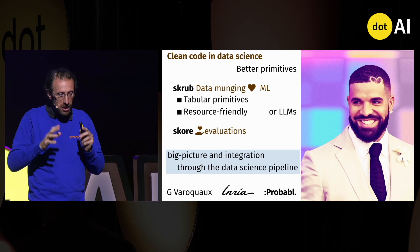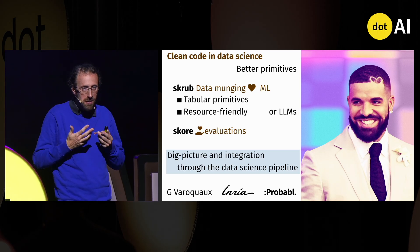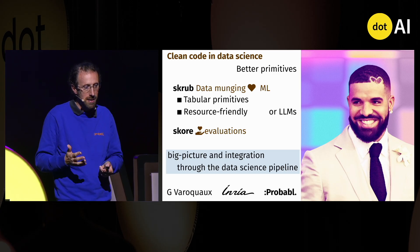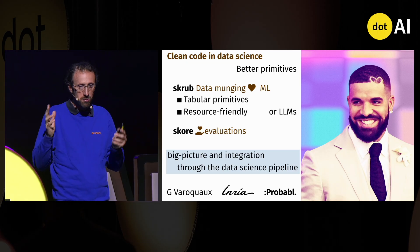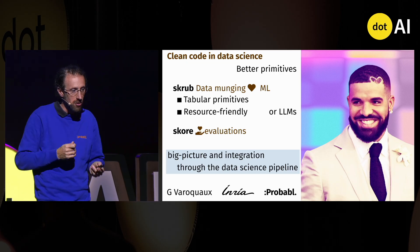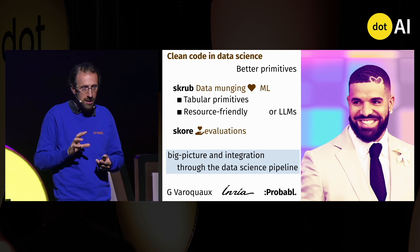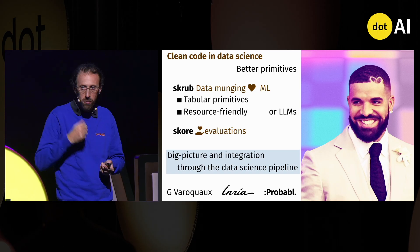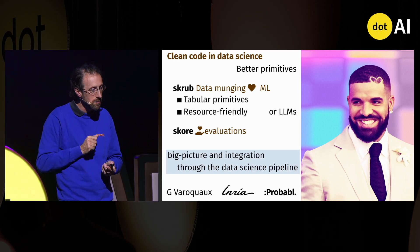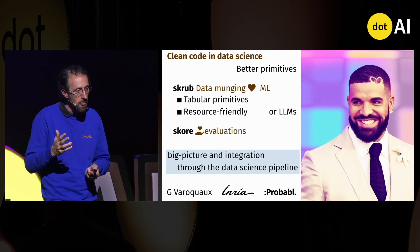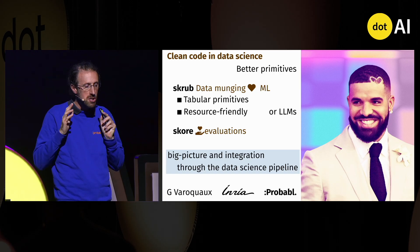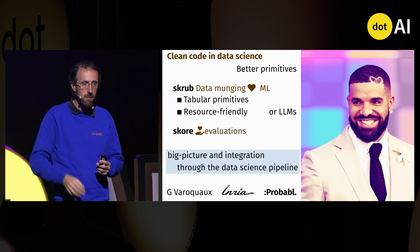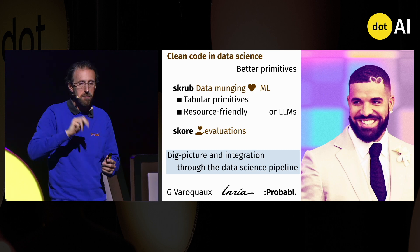If we go back to the problem of messy data science code, my view is that the way forward is using better primitives for data munging — really uniting data preparation and machine learning. In Skrub we like to have things that are very resource-friendly; you saw that I did the demo on my laptop — this wasn't a remote demo. I also mentioned Score, because I think the big-picture problem will be solved by integration throughout the data science pipeline, if we really want to solve the problem of going from data to impact. Thank you.